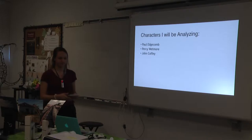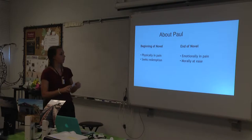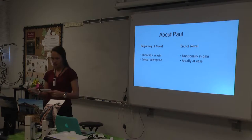The characters I will be analyzing are Paul Edgecombe, Percy Wetmore, and John Coffey. Paul will be the first one I analyze. This slide shows the aspects I will be focusing on: at the beginning, how he is physically in pain and how he is seeking redemption; and by the end of the novel, how he becomes emotionally in pain and reaches moral peace.